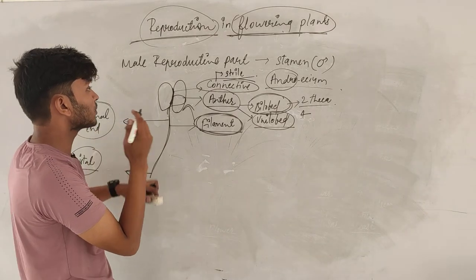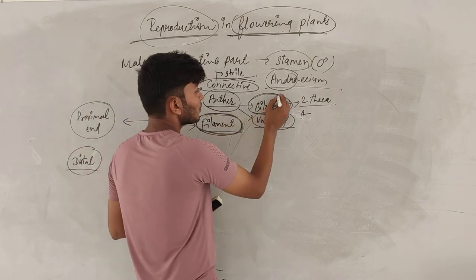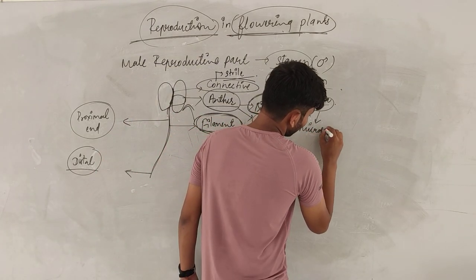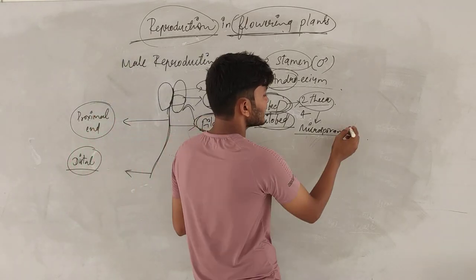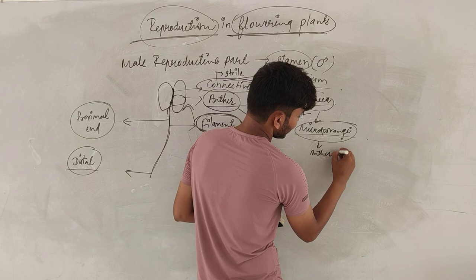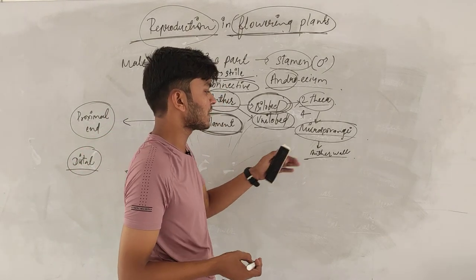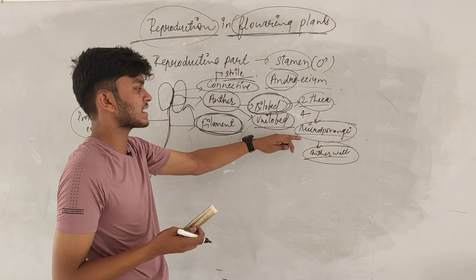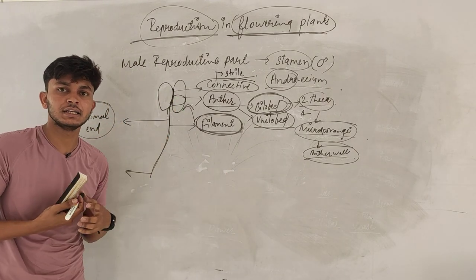So that is all about the structure of the stamen. I hope you have understood the structure of the stamen. In the next lecture, we will talk about the microsporangia — that is, the structure of the anther. Thanks! Have a nice day!